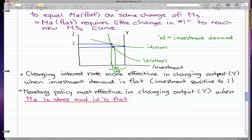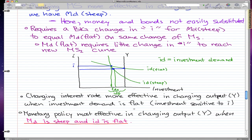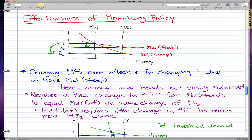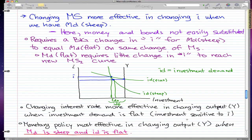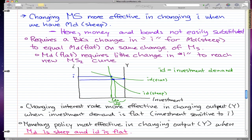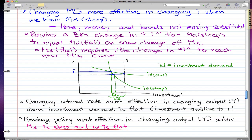This works with this money demand. So the last point is that monetary policy is most effective in changing the output Y when MD is steep and ID is flat. When ID is flat, then investment is sensitive to I. But when we have MD is steep, because a change, big change in the interest rate, so this big change in interest rate works together with ID factor. Because the investment is sensitive to Y, making even greater changes in the economy as a whole.